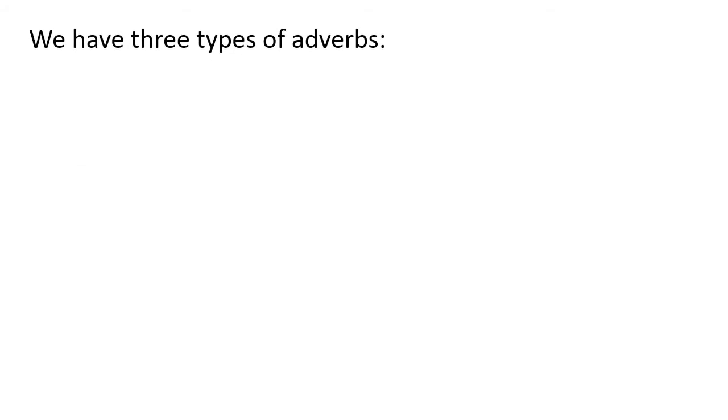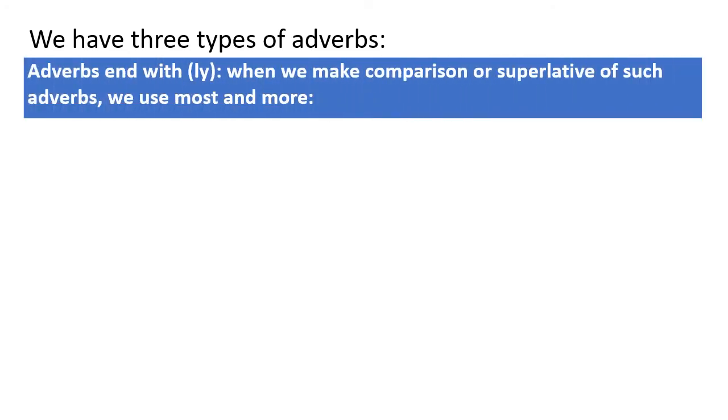Let's go. We have three types of adverbs in comparison. If we want to make a comparison between two things, but in the action, not the things themselves. If we're making a comparison in the action that two people or two things do, not in the persons themselves. For example, we say Abdulrahman is fast and Ahmed is fast. We compare in the speed, not in the person, in the speed. Let's have examples.